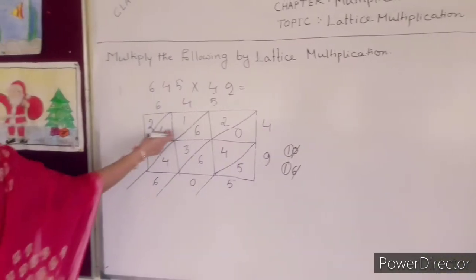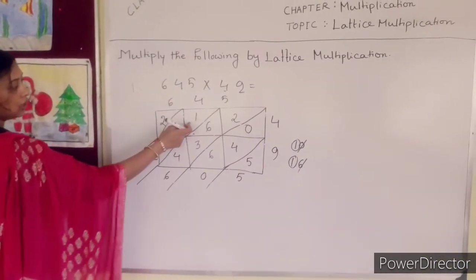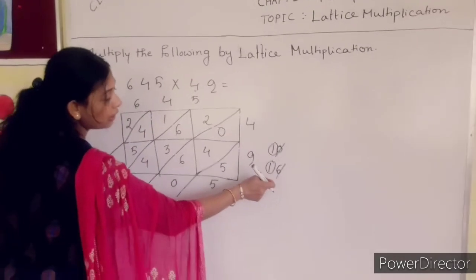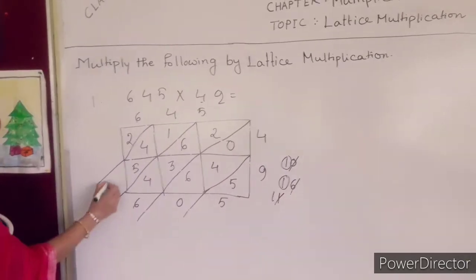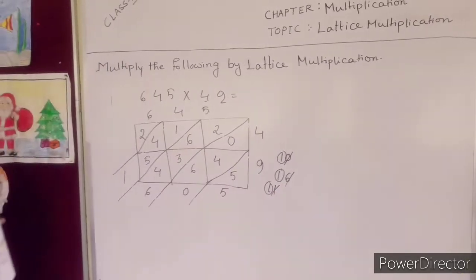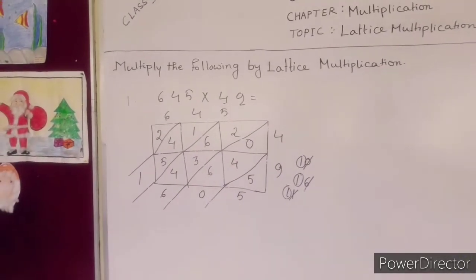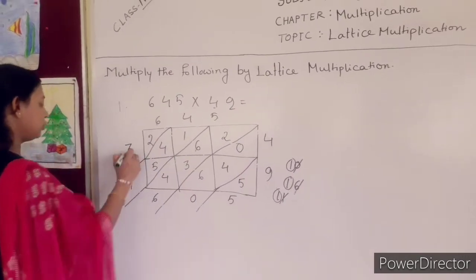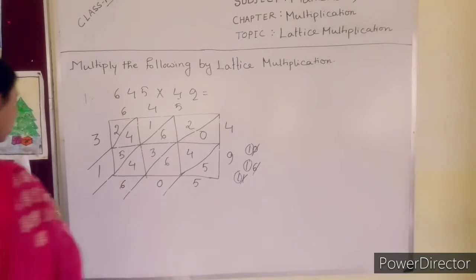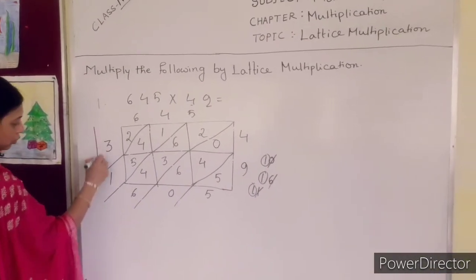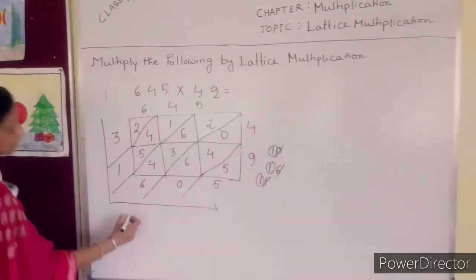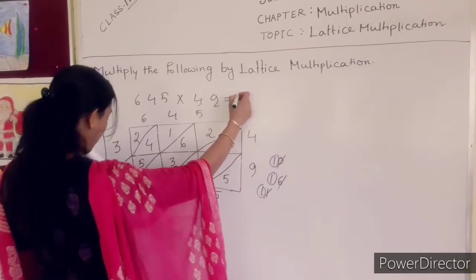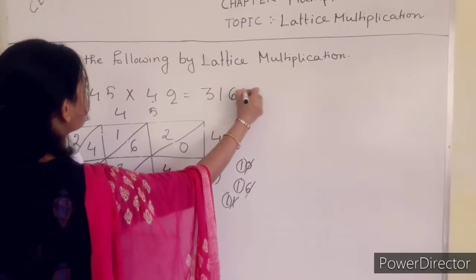And 1 is in your hand. Now the next triangle — there are 3 triangles: 1 plus 4 is 5, 5 plus 5 is 10, 10 plus 1 is 11. Write 1 here and carry 1. Now the next box — only 2 is present — so 2 plus 1 is 3. So the answer is: write 3, 1, 6, 0, 5.